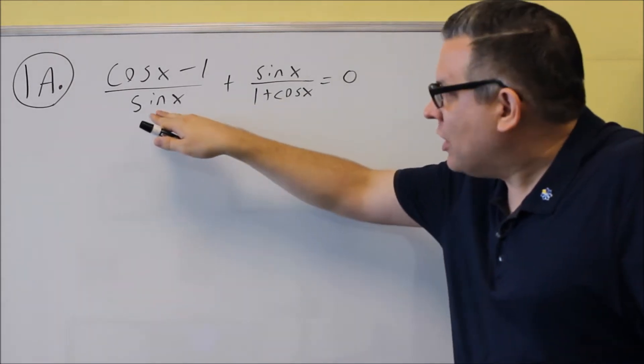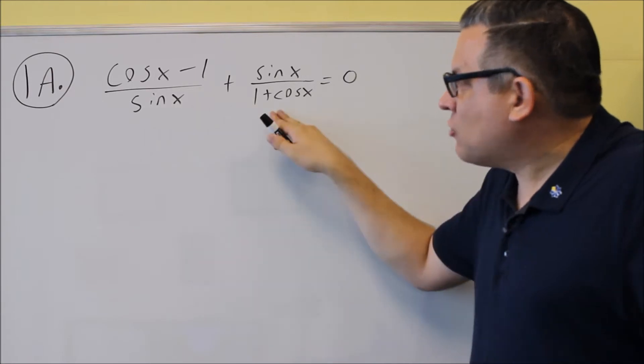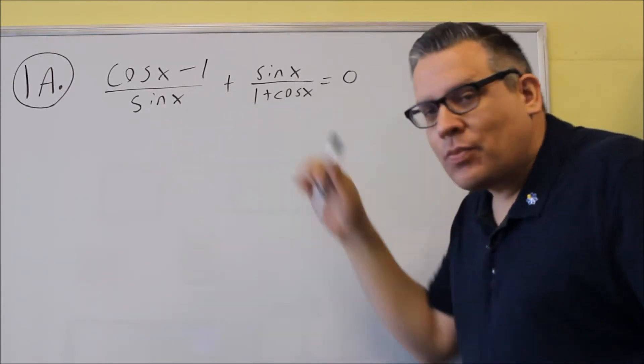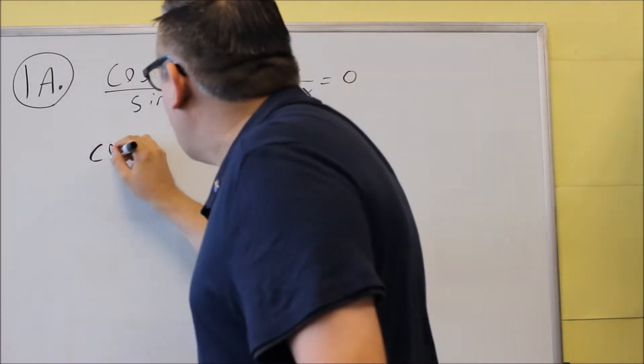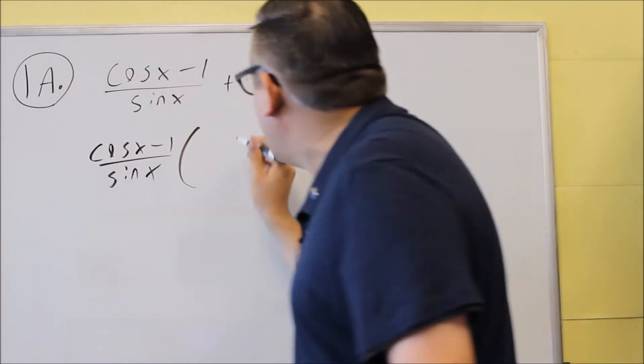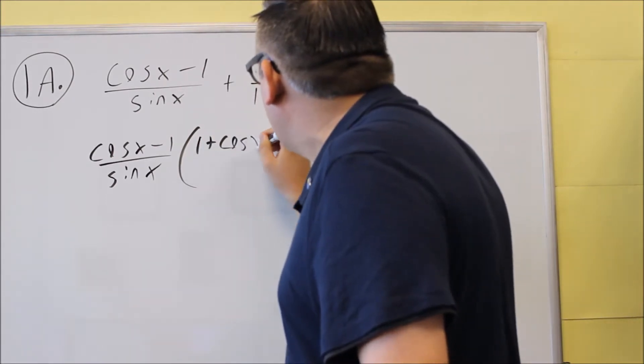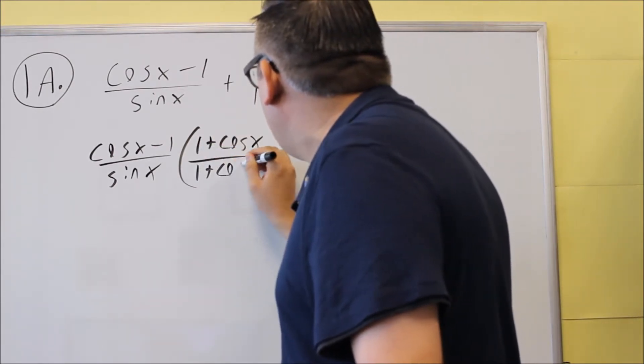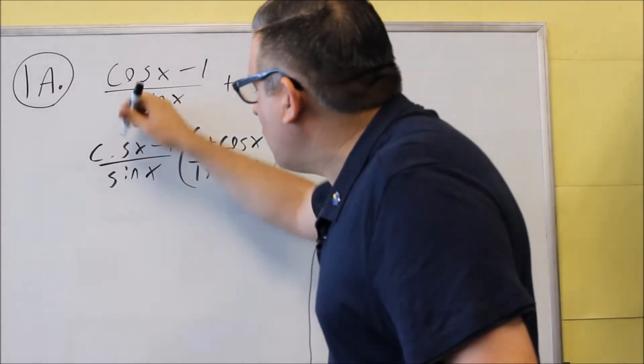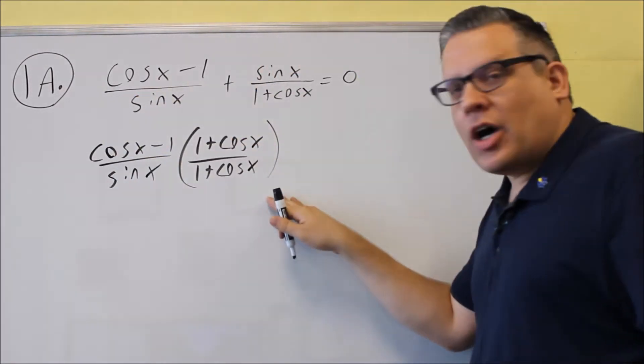And the common denominator will be sine x times 1 plus cosine x. So we're going to multiply each fraction by what it's missing. So we'll start with cosine x minus 1 over sine. This one has the sine, but we need to multiply top and bottom by 1 plus cosine x.